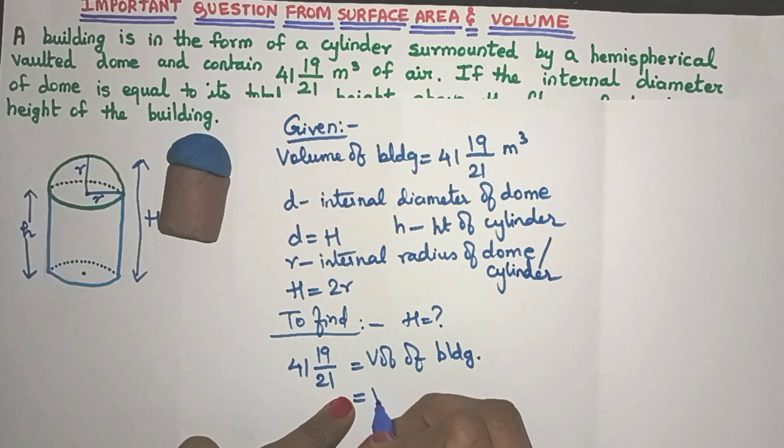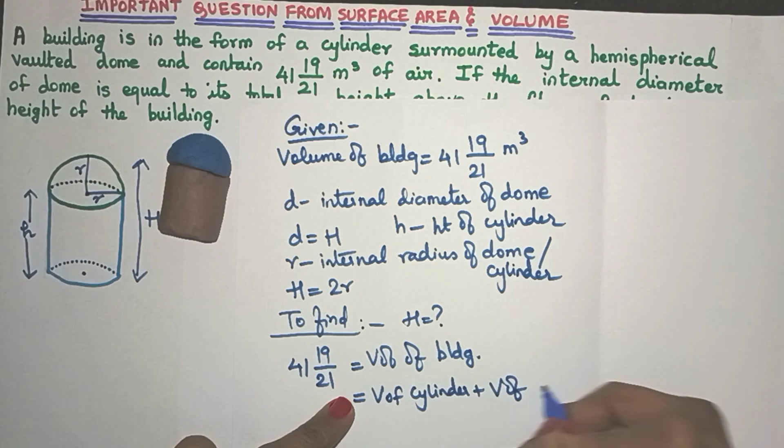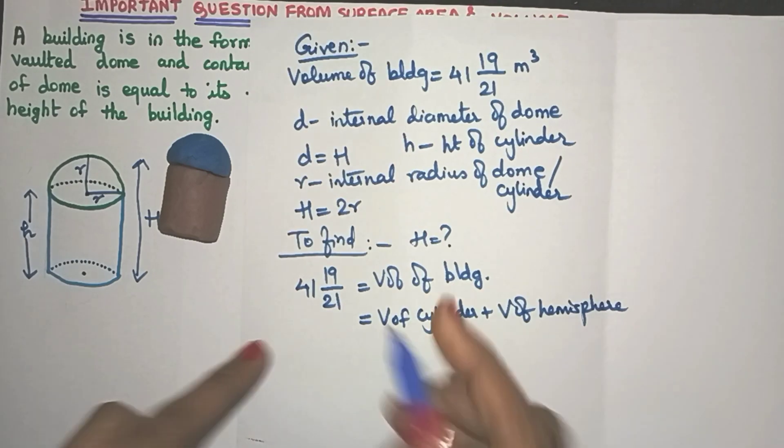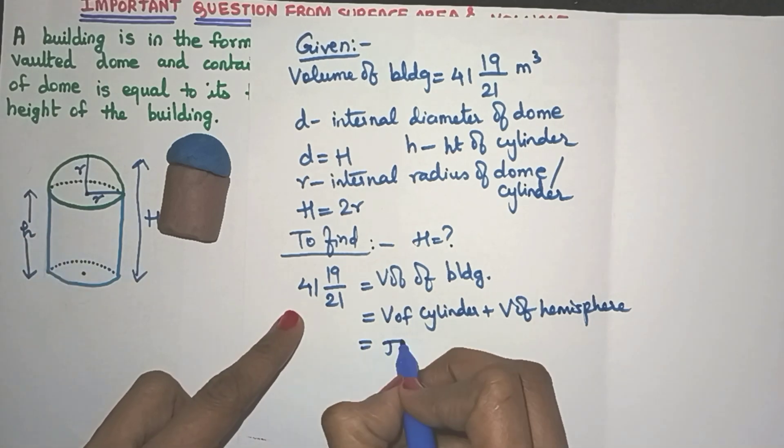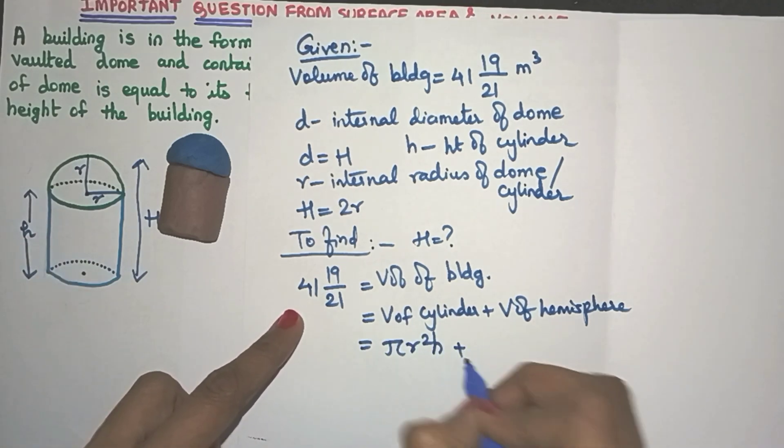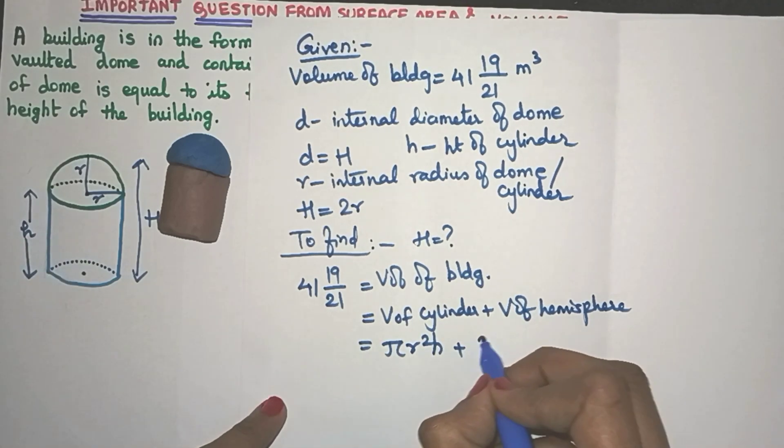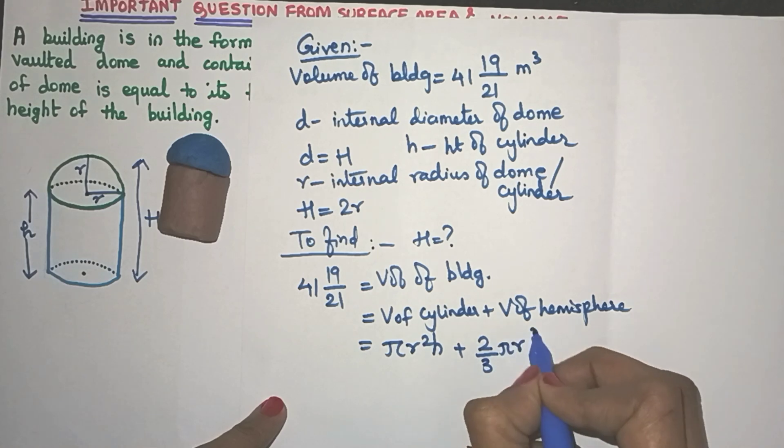So volume of the building is the volume of the cylinder plus the volume of the hemisphere. I hope this is clear. Now what is the volume of the cylinder? I'm sure you remember it. It's pi r square h. That's right. And what is volume of the hemisphere? Yes, 2 by 3 pi r cube.